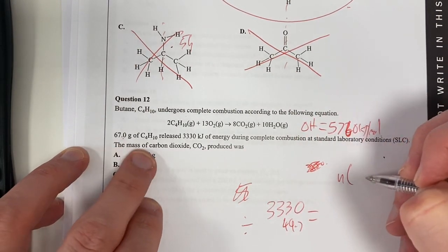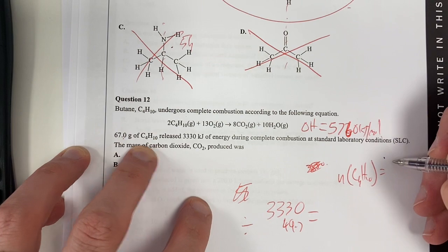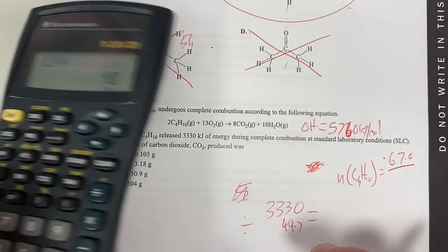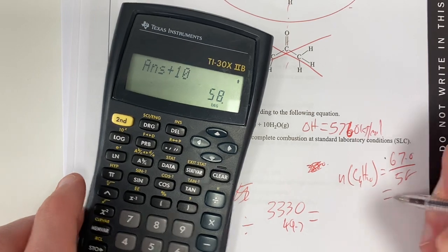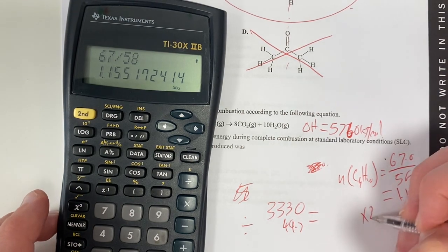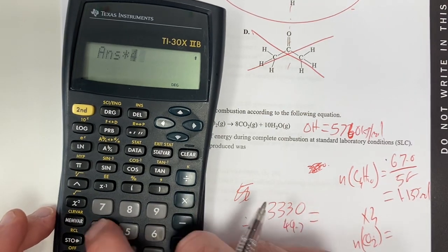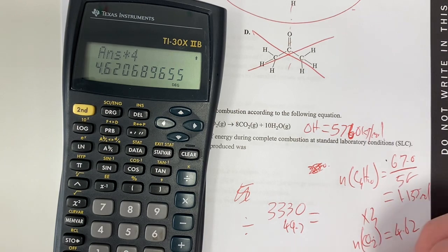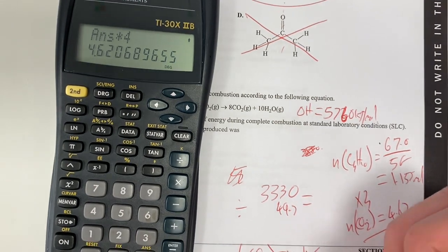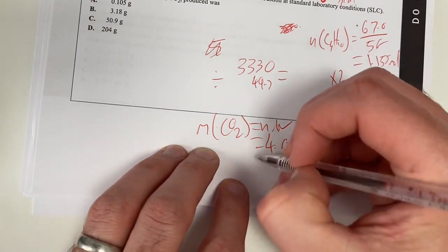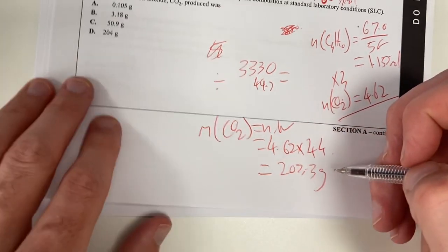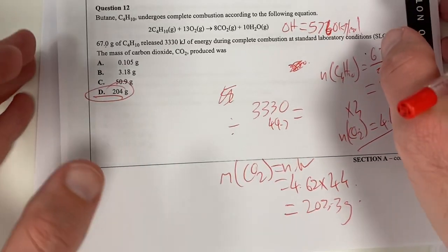So, therefore, I can just work out my number of moles of my butane equals 67.0 divided by whatever butane is. What is butane? 12 times 4 equals that. Plus 10 gives me 58. So, therefore, 67 divided by 58 equals 1.155 mole. Times that by 4 equals my number of moles of carbon dioxide equals 4.62. That's my number of moles of carbon dioxide. My mass of CO2 equals N times MR, which equals 4.62 times 44, which is my molar mass of carbon dioxide, times that by 44 gives me 203.3 grams. And, therefore, it's that one is my answer to that question.